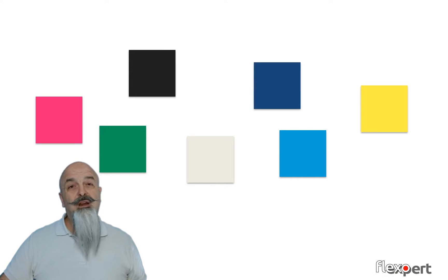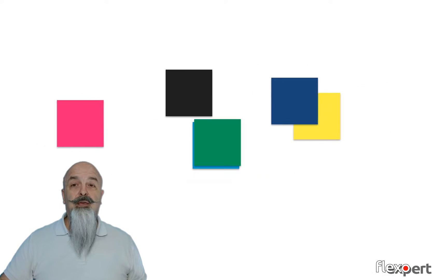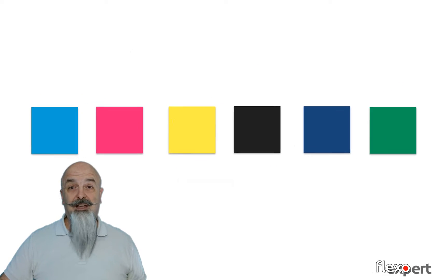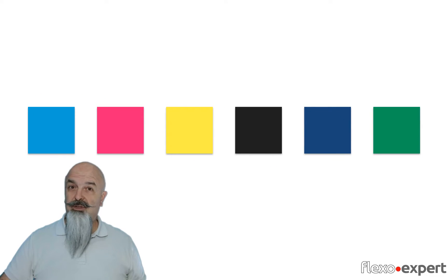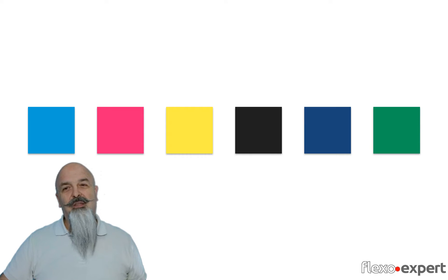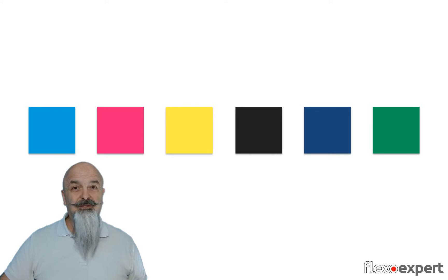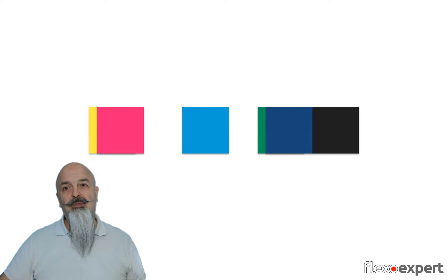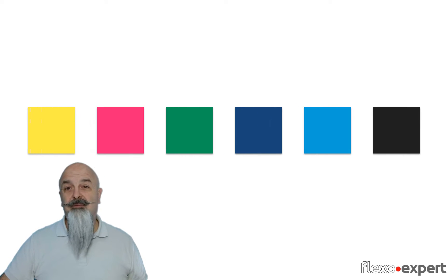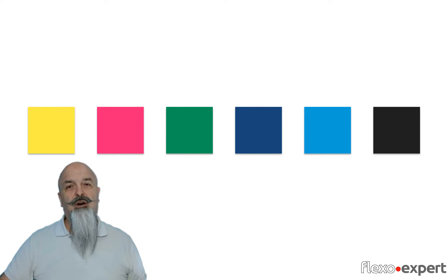But do we really mean that they are printed exactly in that sequence? And why? And what about other eventual colors? In what sequence are they printed? Why do we sometimes change the sequence of our colors in printing?